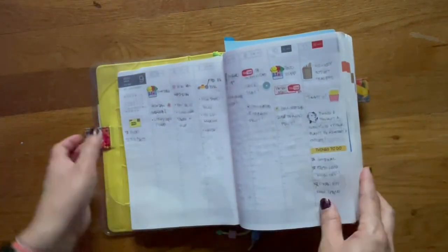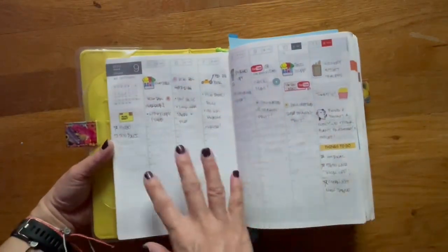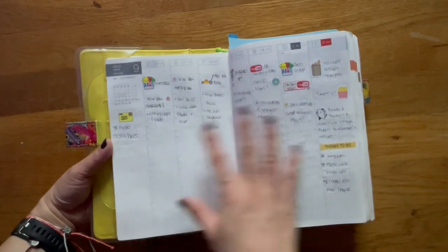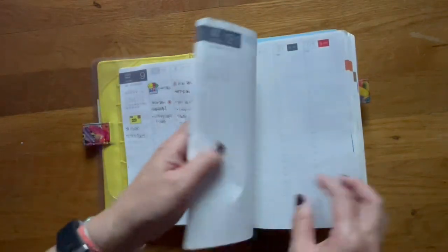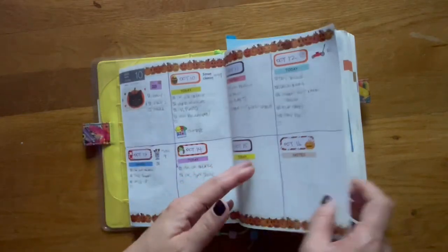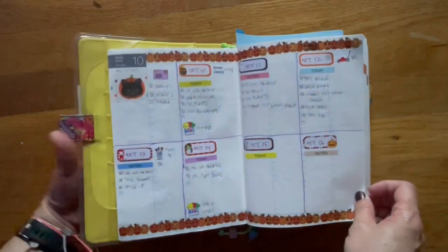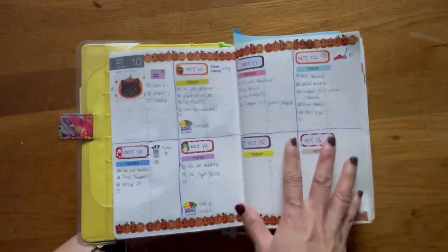So this is a vertical layout. Real simple. But let's go to October for this week. And that is here. So I broke it down like this.